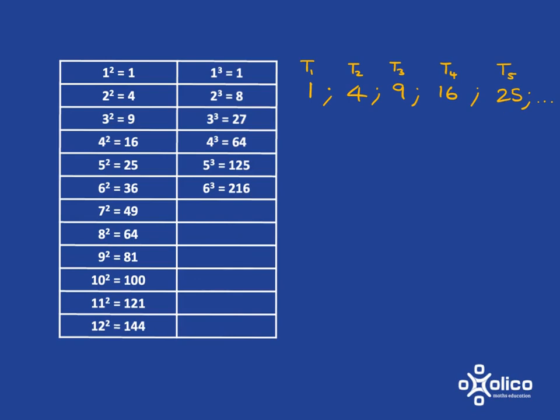See that t1 is 1 squared, t2 is 2 squared, t3 is 3 squared. And so you will immediately be able to say that tn is n squared.